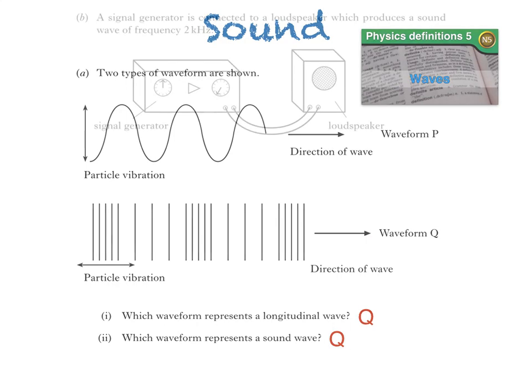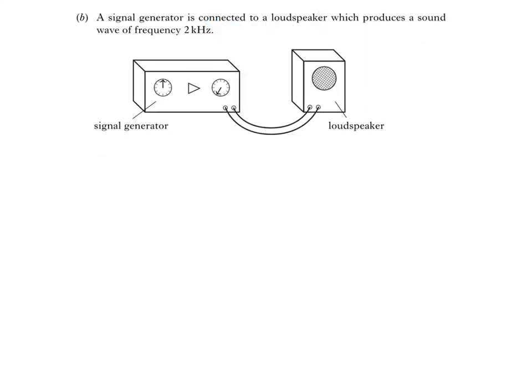Now for part B of the question. A signal generator is connected to a loudspeaker, which produces a sound wave of frequency 2 kHz. Part 1 then asks us to calculate the wavelength of the sound wave in air. To do this, we use this equation, known as the wave equation.